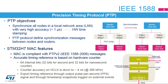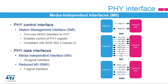The external PHY is controlled by the peripheral through the Station Management Interface, or SMI, that allows read and write access to PHY internal registers. This interface supports the MDIO protocol on a pair of wires, with read and write operation codes available. Two types of interfaces are supported by the peripheral, both supporting full and half-duplex operations at 10 or 100 megabits per second: the classical media-independent interface, or MII, that requires 16 signals between both devices, and the reduced MII that requires only 7 signals, allowing I/O saving.